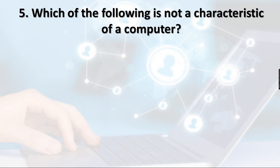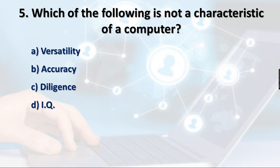Question 5: Which of the following is NOT a characteristic of a computer? Option A: Versatility, Option B: Accuracy, Option C: Diligence, Option D: IQ. Speed, accuracy, diligence, versatility, and storage are all characteristics of a computer, but IQ is related to humans — it stands for Intelligence Quotient. Therefore option D is the right answer: IQ is not a characteristic of a computer.